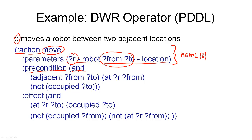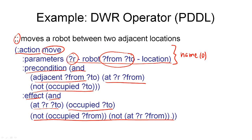Similarly, the effects are listed as a conjunction. These are the same four effects seen previously: the robot must be at the to-location as a result of the action, that location will be occupied, the robot is no longer at the from-location, and that location is no longer occupied. You should now be able to express the other two operators introduced in the previous slide in PDDL notation — so why not try that as a little exercise.